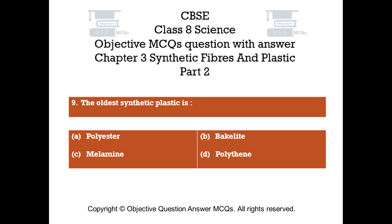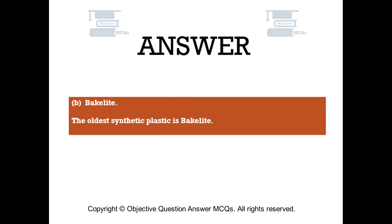Question number 9. The oldest synthetic plastic is: Option A - polyester, Option B - Bakelite, Option C - melamine, Option D - polythene. The right answer is Option B, Bakelite. The oldest synthetic plastic is Bakelite.